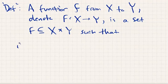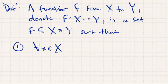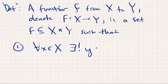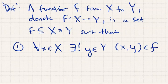So a function we define to be a subset of the Cartesian product X cross Y such that the following condition holds: namely, for every X value in the domain, there exists a unique element in the codomain such that (x,y) is in F.